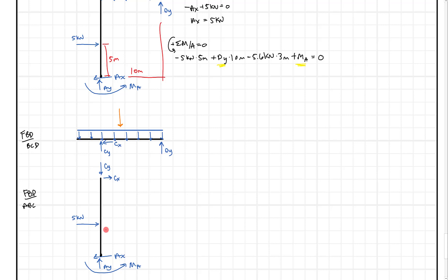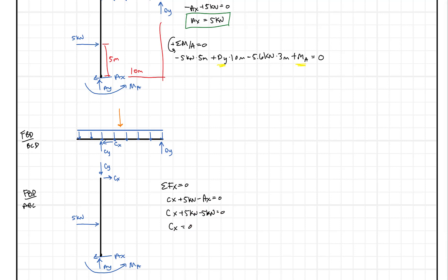On the ABC free body diagram, summing forces in the X direction: CX plus five kilonewtons minus AX equals zero. Since we already found AX equals five kilonewtons, we get CX plus five minus five equals zero, so CX equals zero. We can verify this on the BCD diagram as well — summing X forces there also gives CX equals zero. Same result from a different free body diagram.